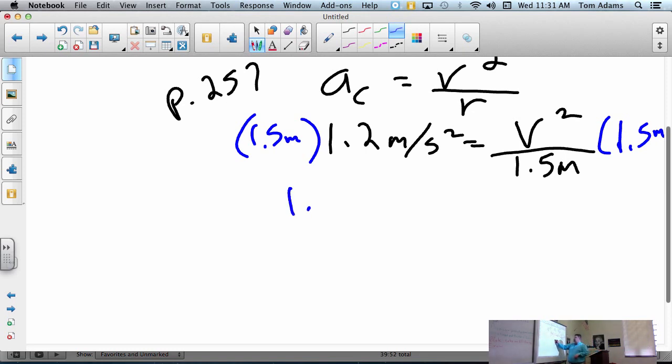1.8, right? So this is 1.8. Is that right? Wow, that's weird. Works out that way. 1.8 meters squared, seconds squared, is equal to the velocity squared. What do we do next?